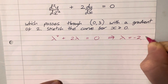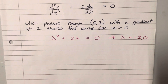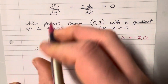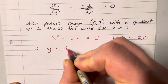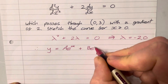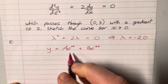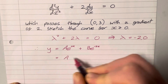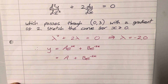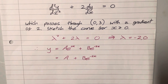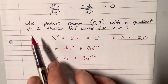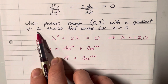Lambda is either minus 2 or 0 — two distinct real solutions. So the general solution, y as a function of x, is y equals A e to the zero x plus B e to the minus 2x. Since A e to the zero x is just A, we can write that as y equals A plus B e to the minus 2x. Now for the particular solution, I'm going to need the derivative because I have the gradient value at a point.